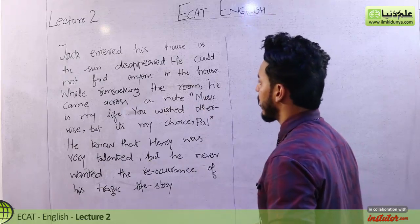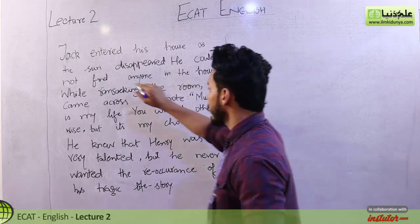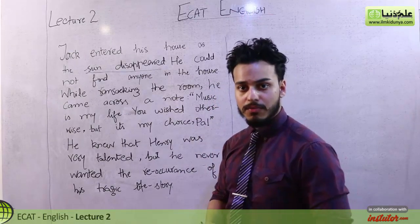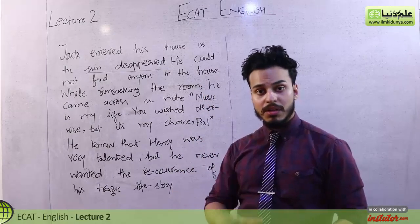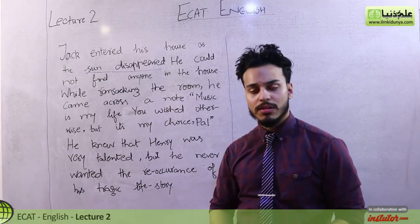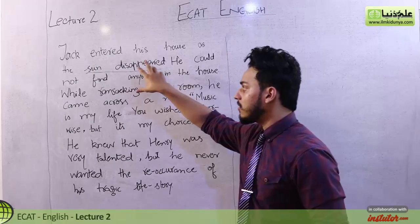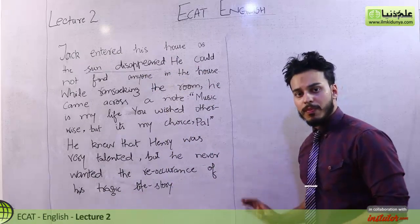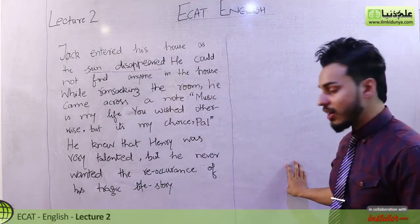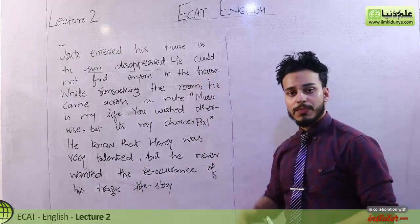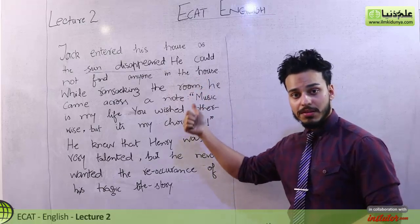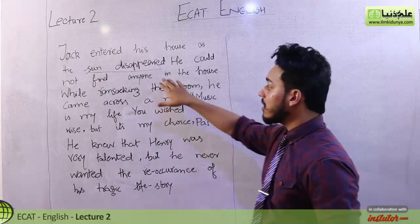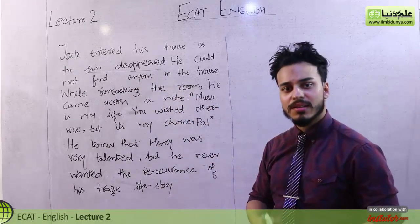Consider: 'Jack entered his house as the sun disappeared.' The disappearance of the sun is obviously going to indicate a time in the evening, right? Or it could be the disappearance of the sun due to some cloudy weather. So we are given a particular statement, and we have to determine what it is hinting at. The disappearance of the sun is a hint — we have a hint, we can imagine this, we can crack this, we can infer this.